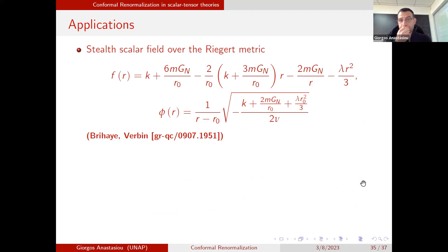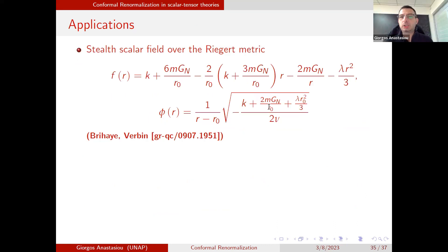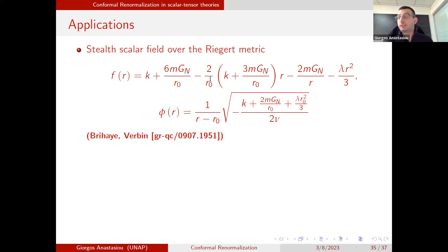For scalar coupling to conformal gravity, I_φ coupled to I_CG, the conformal gravity part is already Weyl invariant; one must Weyl-complete the scalar sector by adding boundary terms. On-shell, using the Σ decomposition, one obtains a similar structure: Weyl squared with finite asymptotics plus a T-dependent term. As before, this is finite for stealth configurations or fast-falling T. An example is a static spherically-symmetric Ricci-flat metric with a stealth scalar field over the Ricci-flat background.